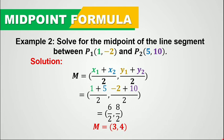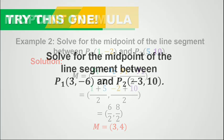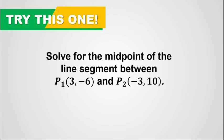That is just how the midpoint formula works. Now I want you to try this one: solve for the midpoint of the line segment between the given points. Point 1 has coordinates 3 and negative 6 — so x sub 1 is 3 and y sub 1 is negative 6 — and p2 has coordinates negative 3 and 10 — so x sub 2 is negative 3 and y sub 2 is 10.